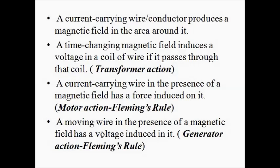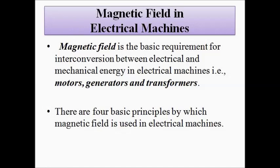The fourth principle: a moving conductor or wire placed in a magnetic field has a voltage induced in it, which is the basis of generator operation — Fleming's right-hand rule. These four principles are utilized in the operation of electrical machines, be it a transformer, motor, or generator. All of these principles involve one common link, which is the magnetic field. We must now understand some basic concepts and laws associated with the magnetic field.